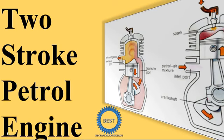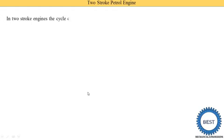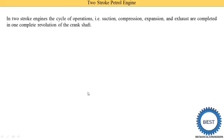In this video I discuss the two-stroke petrol engine, its construction and working. In a two-stroke petrol engine, the cycle of operation — suction, compression, expansion, and exhaust — is completed in one revolution of the crankshaft. In a four-stroke engine, these four strokes are completed in two revolutions of the crankshaft.